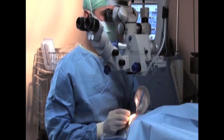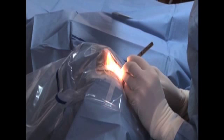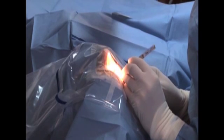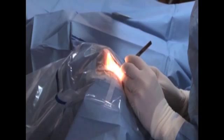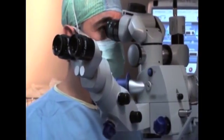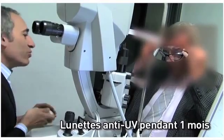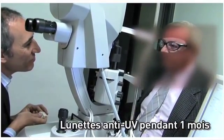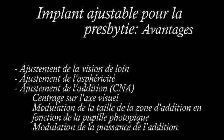There is no difference in terms of surgery for the adjustable lens versus the classical lens. After the surgery, UV-protecting goggles are required for one month. The adjustable lens is the latest technique for the correction of presbyopia. Its advantages are fine-tuning of distance vision, modulation of asphericity to compensate for intermediate vision, and most importantly the ability to adjust the addition zone for near vision based on pupil size and the requirements of the patient.